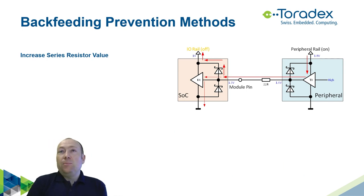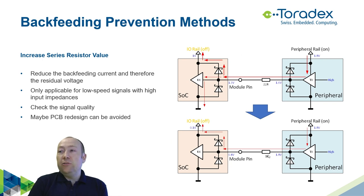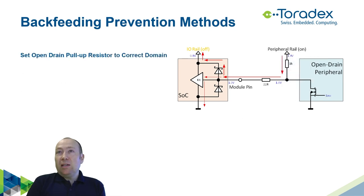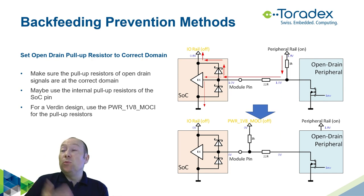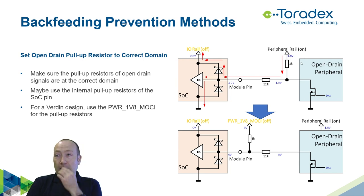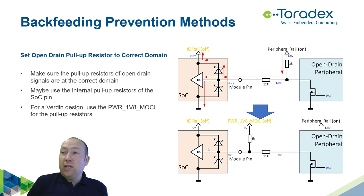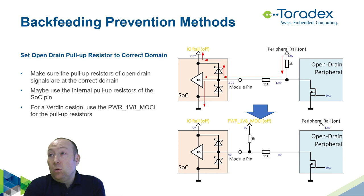Another option — especially useful after a board is already built — is to increase the series resistor. This only works for low-speed signals with appropriate input impedance and won't entirely prevent backfeeding, but it reduces the current to an acceptable level. For open drain signals, ensure your pull-up resistors are on the correct voltage domain. With Verdin, use the PWR_1V8_MOCI as a pull-up, or use the configurable pull-up resistors built into the SOC pins — those are also safe from backfeeding. You can also use the power enable MOCI to switch the pull-up rail on and off.